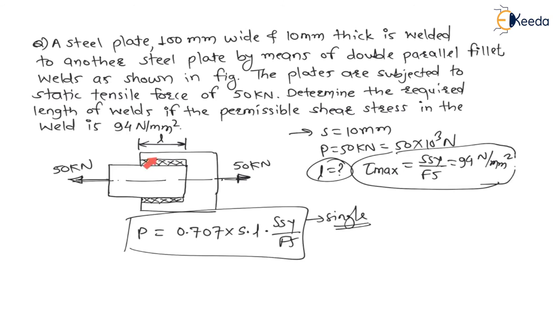But my dear students here on top as well as bottom there are 2 times, this L we have to consider 2 times. It is a double fillet weld, therefore for double fillet weld we have to multiply this formula with 2. Therefore into 2 here in our case we will get into 2.